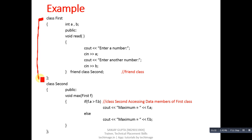You can see this is class First and this is class Second. In this program we have total two classes. Class First has two variables A and B. Inside public section, function read is defined which is reading value of A and B.